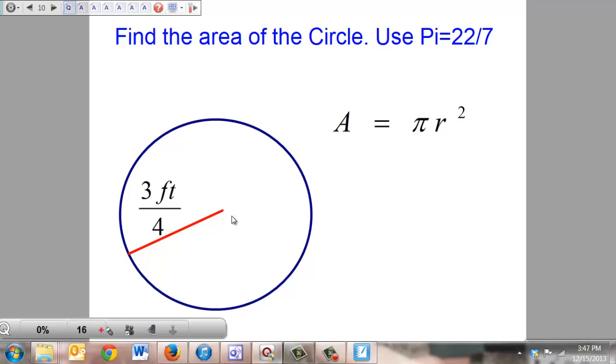The instructions tell you, use pi equals 22 over 7, the fractional version of pi. And we're going to still use the same formula. Area equals pi times radius squared. And this time, they give us a radius of 3/4 feet.